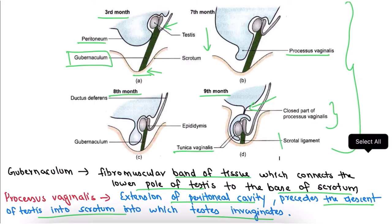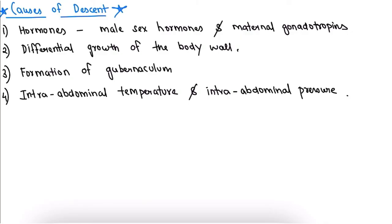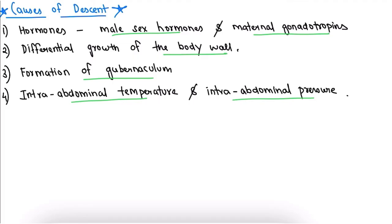The remnants of the gubernaculum form the scrotal ligament. There are four probable causes of descent: first, hormones — specifically male sex hormones (androgens) and maternal gonadotropins; second, differential growth of the body wall; third, formation of the gubernaculum, which may pull the testis towards the scrotum; and fourth, intra-abdominal temperature and intra-abdominal pressure.